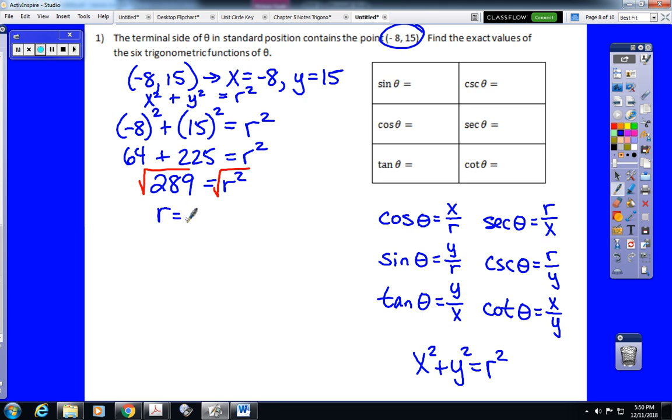And then the final step in the process of finding r is to take the square root of 289. Now normally this would imply that r would be plus or minus 289. However, you may recall me saying back in chapter 1 and 2 when we learned this information that r is the distance from the origin, which means r is always positive because distance cannot be negative. So r would be 17.